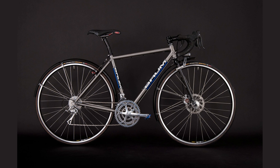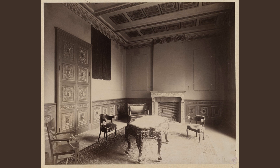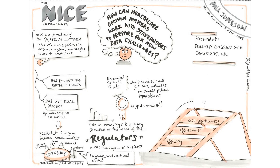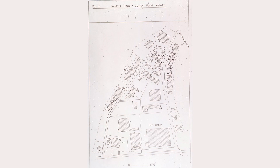The most common document used in estate planning is a will — a legal document that outlines how a person's assets will be distributed after their death. But estate planning also involves other important documents, such as trusts, powers of attorney, and healthcare directives. A trust is a legal arrangement in which a person's assets are held by a trustee for the benefit of another person or group of people. A power of attorney gives someone else the authority to act on your behalf, such as managing your finances or making healthcare decisions. A healthcare directive outlines your wishes for medical treatment in the event that you become incapacitated and unable to make decisions for yourself. All of these documents are important components of estate planning.